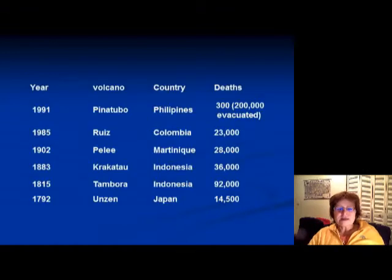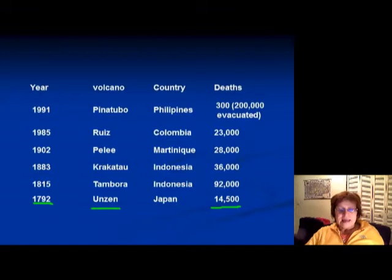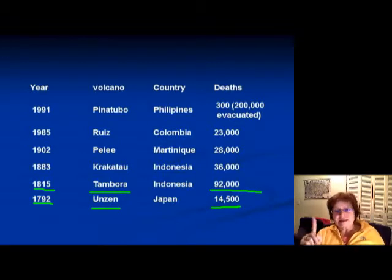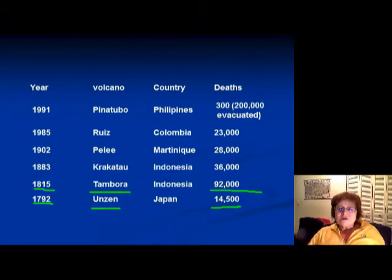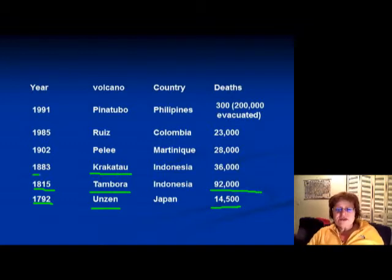This slide shows some historic major eruptions. Starting with 1792, the volcano Unzen in Japan killed 14,500 people. In 1815, Tambora erupted in Indonesia and killed 92,000 people. In 1833, Krakatoa, also in Indonesia, killed 36,000 people. In 1902, Mount Pelée in Martinique killed 28,000 people.